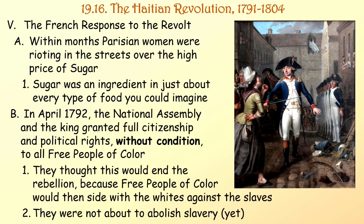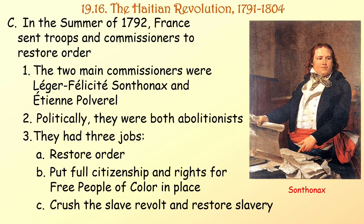The French response to the revolt: within months, Parisian women were rioting in the streets over the high price of sugar, which was an ingredient in just about every type of food in France. So in April 1792, the National Assembly and the king granted full citizenship and political rights without condition to all free people of color. They thought this would end the rebellion by getting free people of color to side with whites against the slaves. The National Assembly was not about to abolish slavery yet. In the summer of 1792, France sent troops and commissioners to restore order in Saint-Domingue.